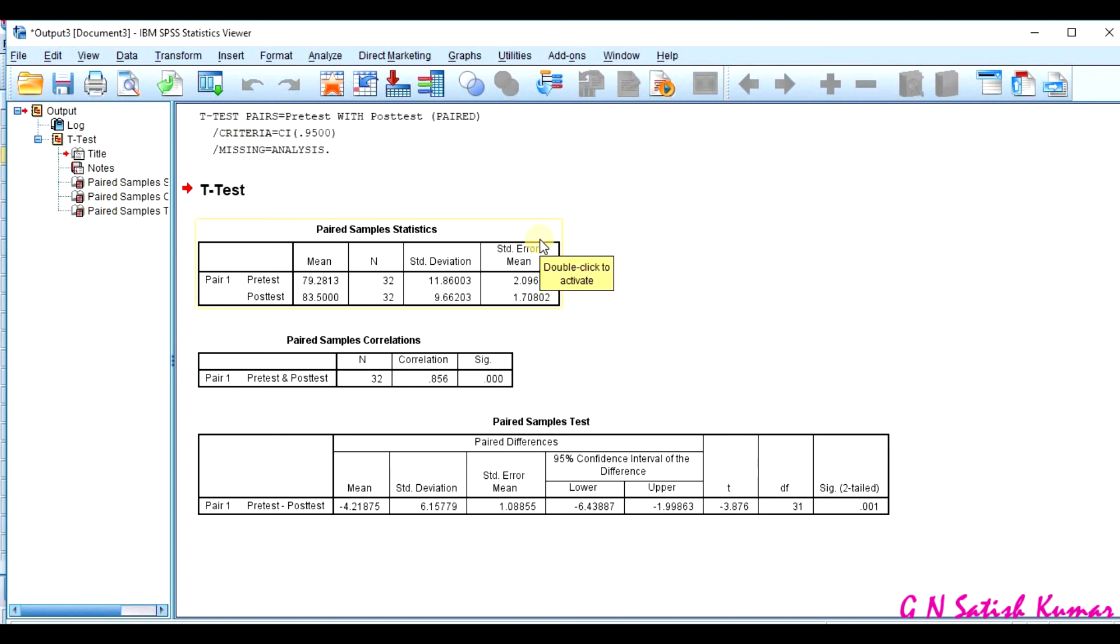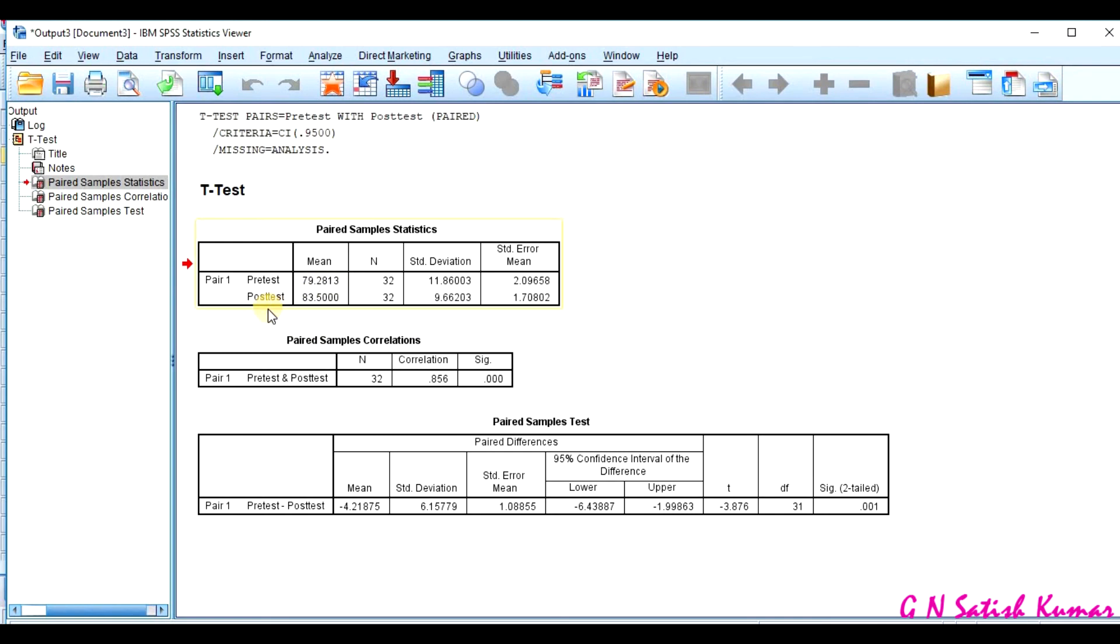Now, this is the output screen, where I have the first table pre-test mean is 79.2813. The second one is post-test is 83.5.